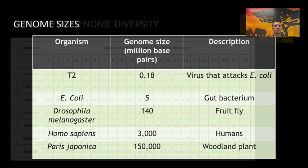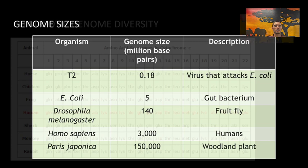Different species have different numbers and types of genes, and genes can be added or removed as species diverge from a common ancestor. We typically see them progress slowly as they adapt to different ways of life in terms of their genome diversity.